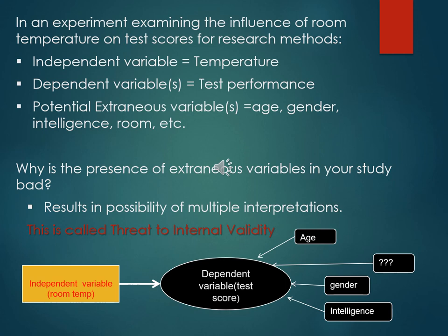Let's say the independent variable is room temperature and the dependent variable is test score, so this experiment is interested in the effect of room temperature on test performance. However, because you have lots of people with different age groups, gender, intelligence, etc., those are impinging upon and potentially affecting the dependent variable. These are called extraneous variables, and to maximize internal validity you have to remove their effect when interpreting results.